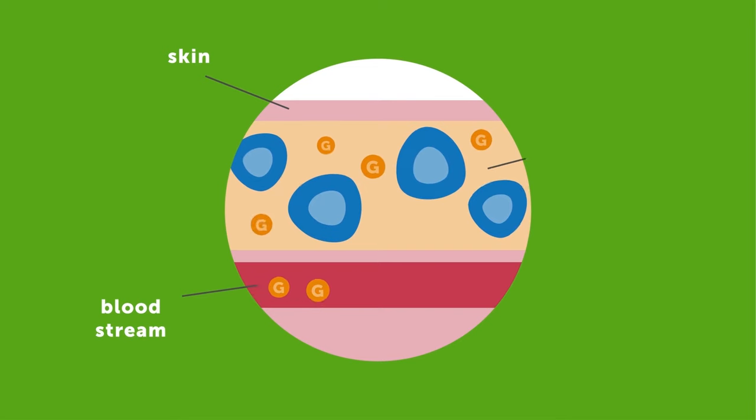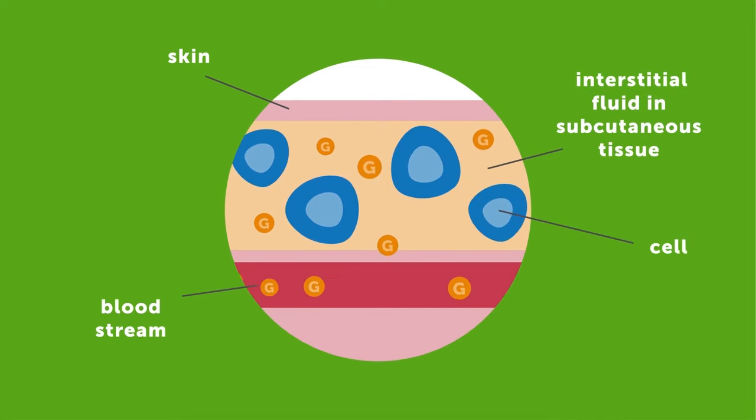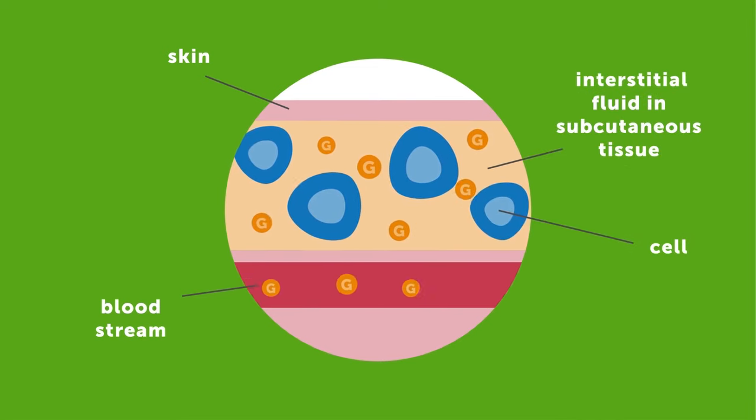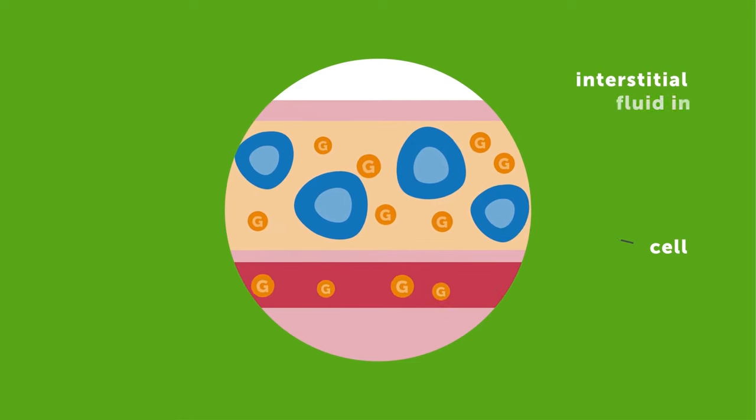The body is steadily releasing glucose into the bloodstream, which then moves into the interstitial fluid surrounding the body's cells, before being absorbed by the cells for energy.